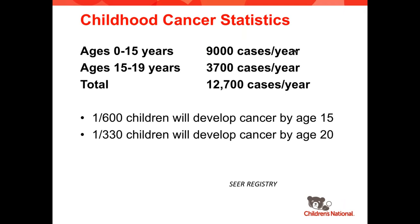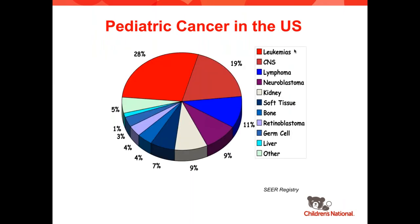Childhood cancer is still a prevalent concern. We see about 9,000 cases per year in patients ages 0 to 15, and about 3,700 cases per year in ages 15 to 19, totaling about 12,700 cases per year. This means one in 600 children will develop cancer by age 15, and one in 330 by age 20. The majority of pediatric cancers are leukemias and lymphomas, followed by central nervous system tumors — the most common solid tumors — then neuroblastoma, kidney tumors, bone tumors, soft tissue sarcomas, germ cell tumors, retinoblastomas, and rare tumors.